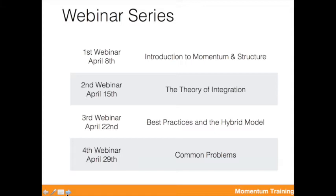We talked about three elements of the theory: active popular support, escalation, and absorption. Last week we went through the best practices of the hybrid model, talked about other open source movements, the DNA, the elements, what it looks like. And today we're going to talk about what are the most common problems once you decide you want to do the integration or parts of the model.